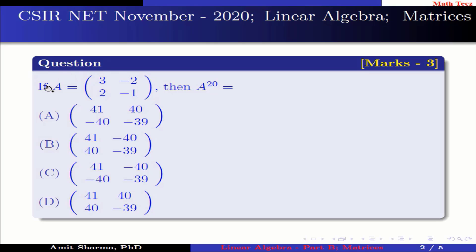Question is: if A is a 2 cross 2 matrix having element 3, -2, 2, -1, then A raised to the power 20 is: option A, the matrix having element 41, 40, -40, -39; option B, matrix having the element 41, -40, 40, -39; option C, matrix having the element 41, -40, -40, -39; option D, matrix having the element 41, 40, 40, -39.